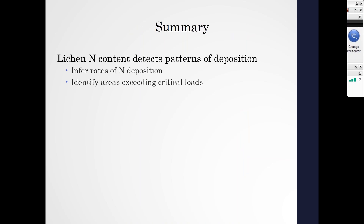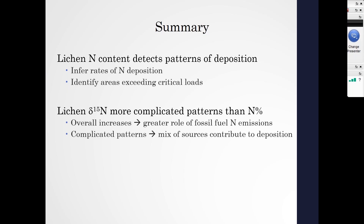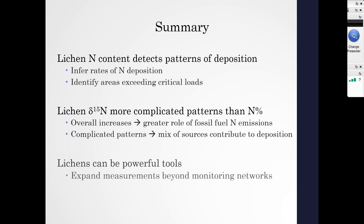To summarize: we looked at the nitrogen content — the amount of nitrogen in lichen tissues — to get an idea of the amount of deposition over time. We could begin to infer nitrogen deposition rates from these lichens, as well as identify areas that were exceeding those critical loads or that safe threshold of nitrogen deposition. Our lichen stable isotope composition painted a much more complicated picture, indicating there's a mix of sources contributing to nitrogen deposition. Overall, we saw an increase in stable isotope in some regions, pointing to fossil fuel emission sources. This work shows how lichens can be really powerful tools to expand our measurements and analysis of nitrogen deposition beyond the current monitoring networks.